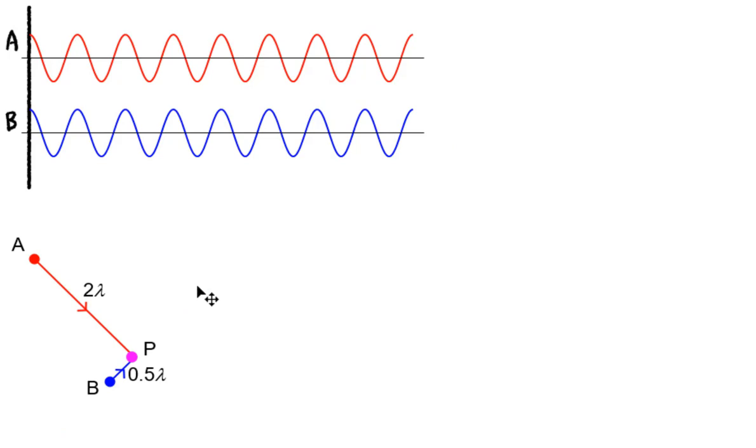Now let's choose another location P such that P is two lambdas away from A. So P will correspond to this point here. And P is also half a lambda away from B. So that will mean P will be here. Now let's align the two point P's together.